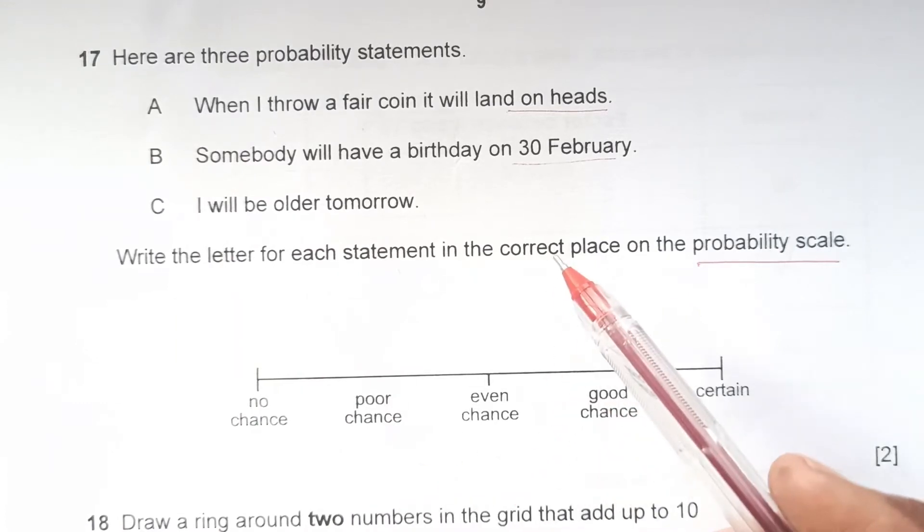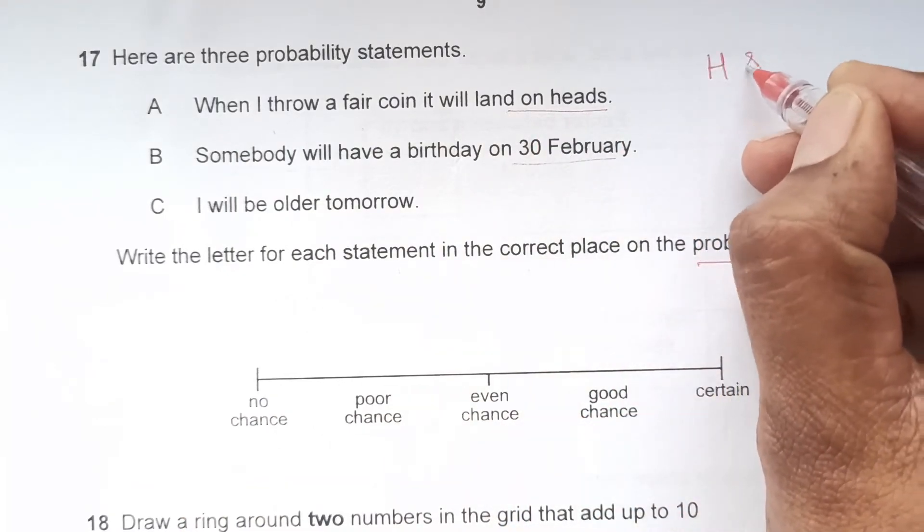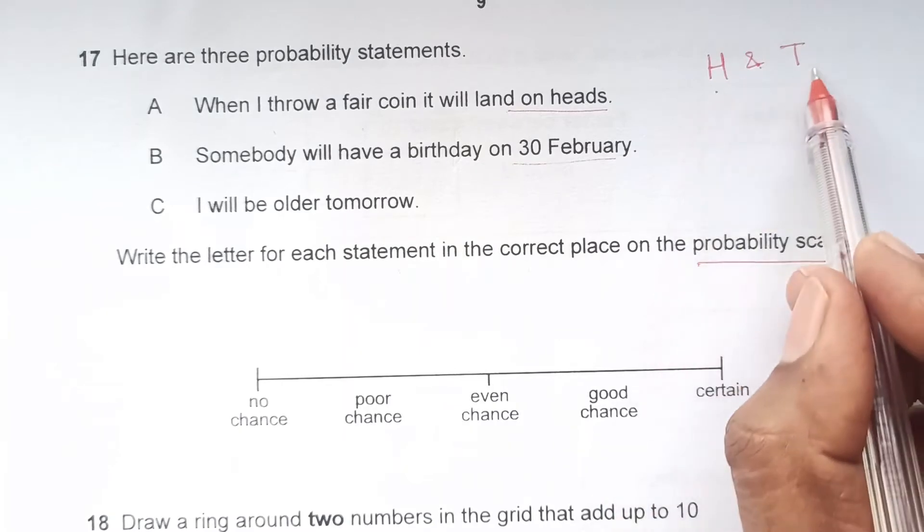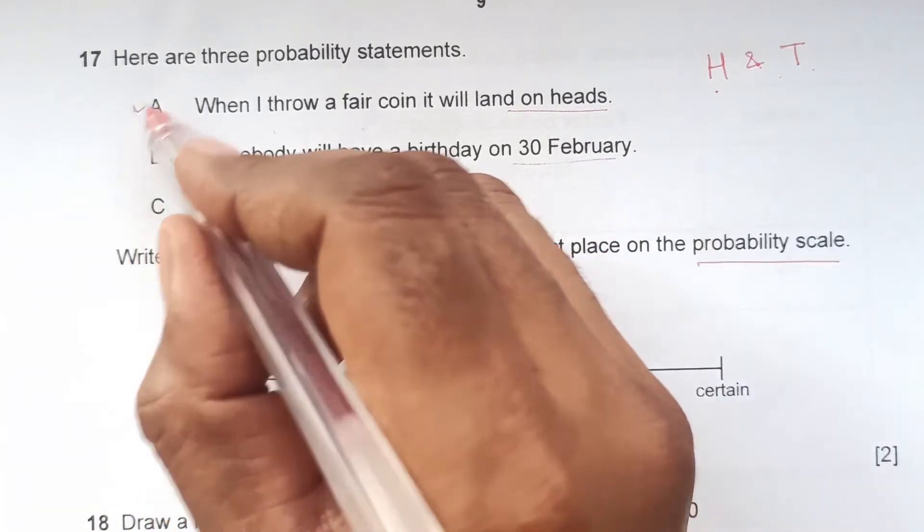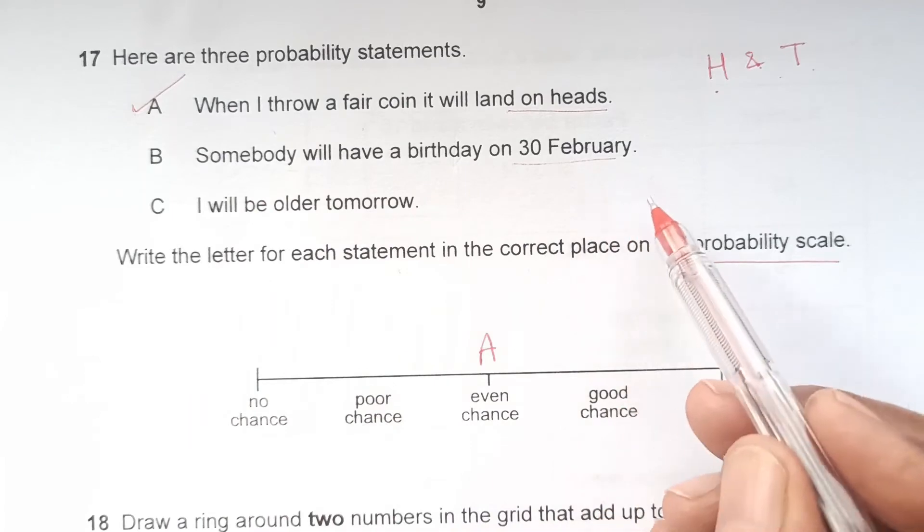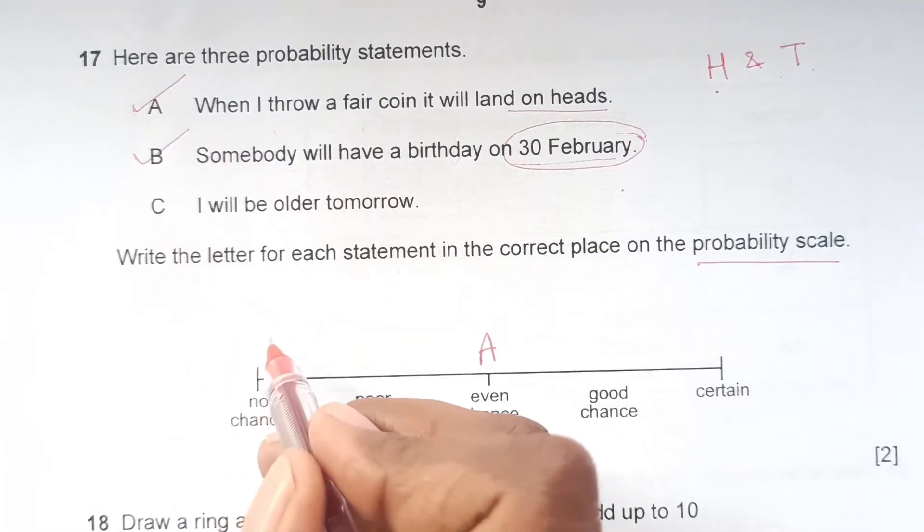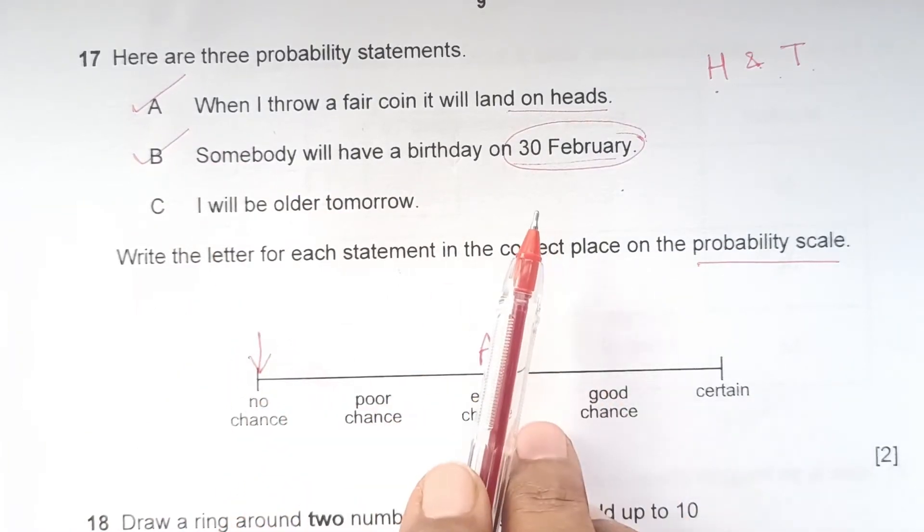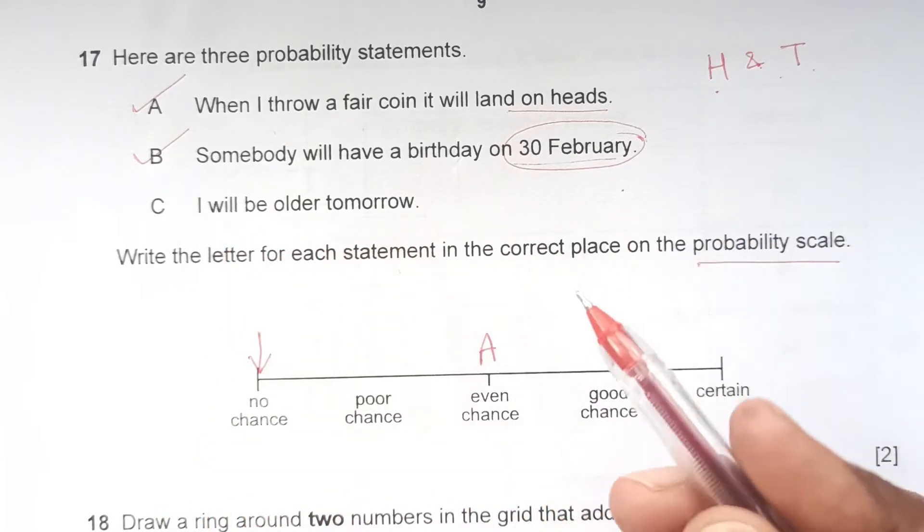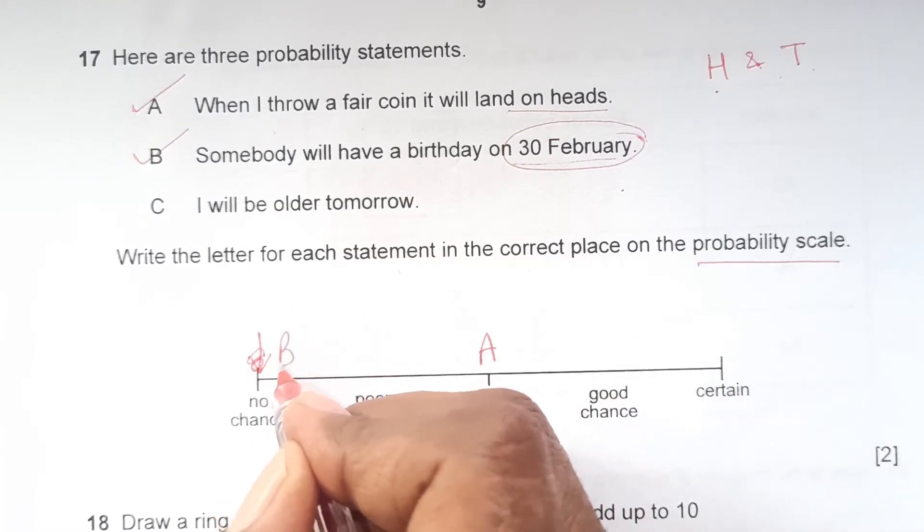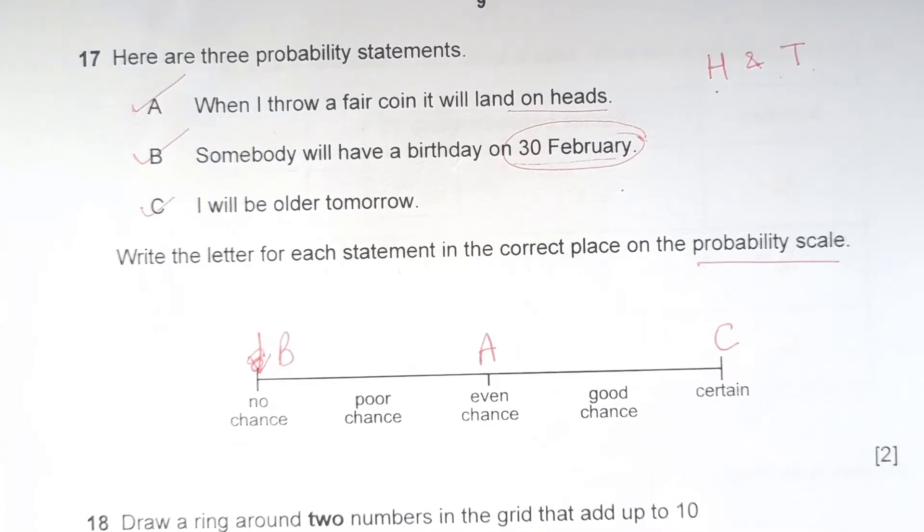We can start with A. When you throw a coin, the coin has head and tail. Either it will get head or tail, so probability of both will be half and half. That means even chances. So A will go here. We are done with A. B: Somebody will have a birthday on 30th February. Do you guys know that there is no 30th February? So there are no chances because February is 29th and 28th days. We have to put B here. I will be older tomorrow - definitely you are going to be older tomorrow. So C will go here for certain events.